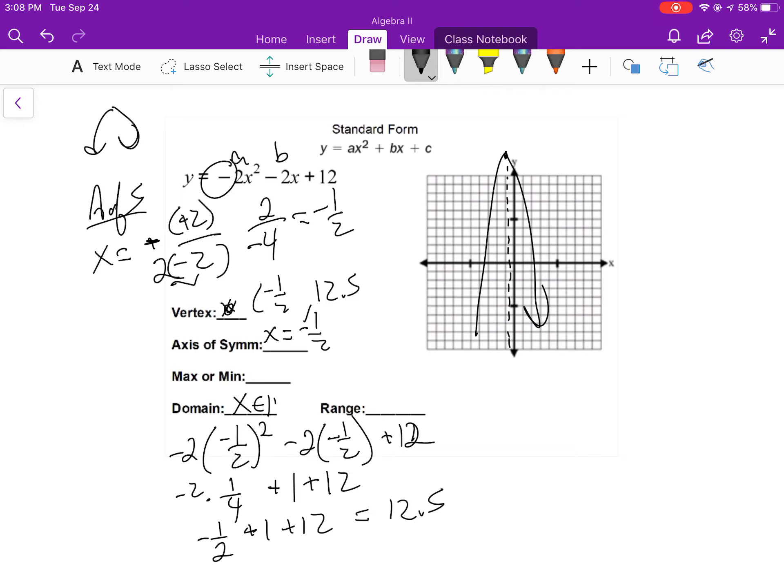So x is all real numbers. And my range, y is less than or equal to 12.5. And I've got a max this time of y is equal to 12.5. And that is graphing using standard form.